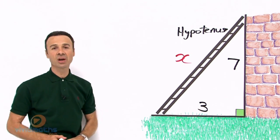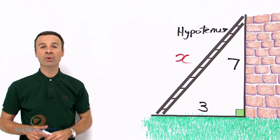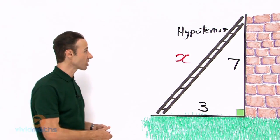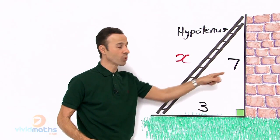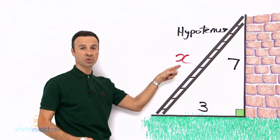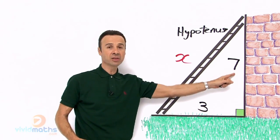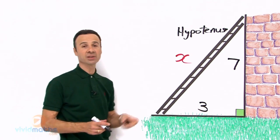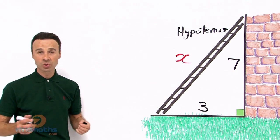So now let us write down the Pythagorean equation. It is going to be these 2 squared will equal this squared. Remember, the 2 side lengths are squared and they always equal the hypotenuse squared.